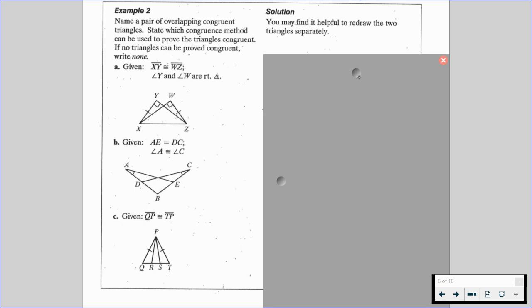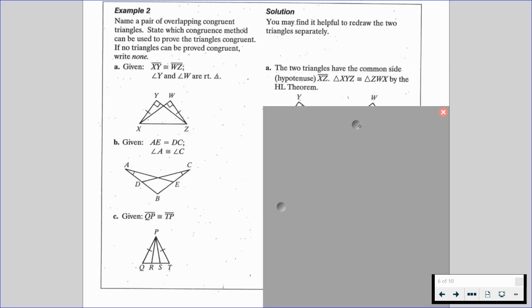So if we are going to be looking at A, we can say that the two triangles have a common side. The hypotenuse is going to be XZ. So from here, we are able to say that triangle XYZ is congruent to triangle ZWX by the hypotenuse-leg theorem, or just the HL theorem.